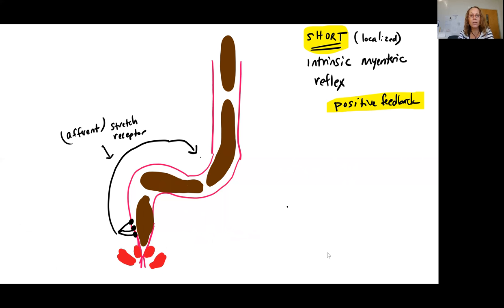Short reflexes mean localized. This means it's outside of the central nervous system. So this is also described as the intrinsic, again meaning internal, myenteric reflex. So it's involving that myenteric plexus. Your defecation reflex is a positive feedback mechanism. So remember that looks like you're going along at homeostasis. Your signaling gets more and more and more extreme until you finally go back to homeostasis.